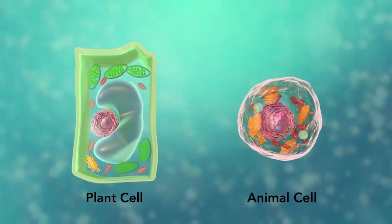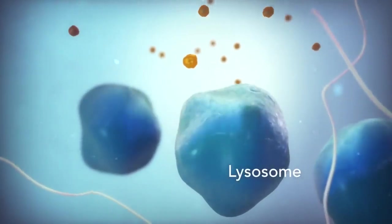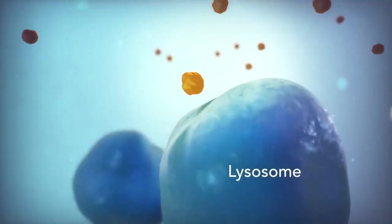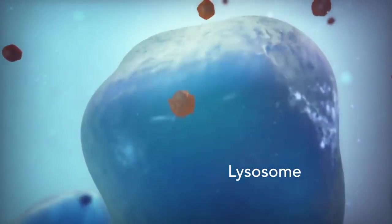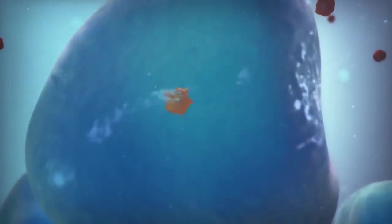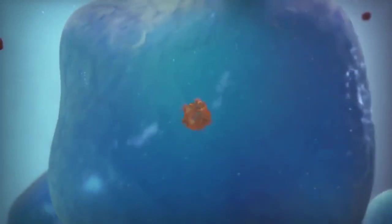Going back to the animal cell, you will see an organelle called a lysosome. Lysosomes are the garbage collectors that take in damaged or worn-out cell parts. They are filled with enzymes that break down this cellular debris.